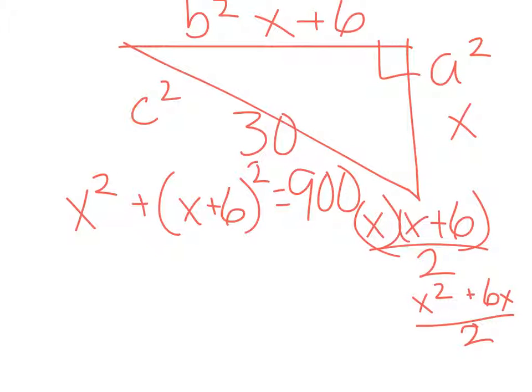Now, we need to multiply this out, x squared stays the same, x plus 6 squared. If I use the FOIL method, that should give me x squared, plus 12x, plus 36, equals 900.